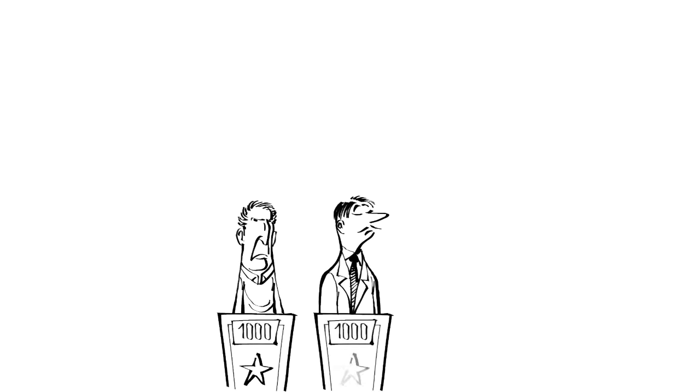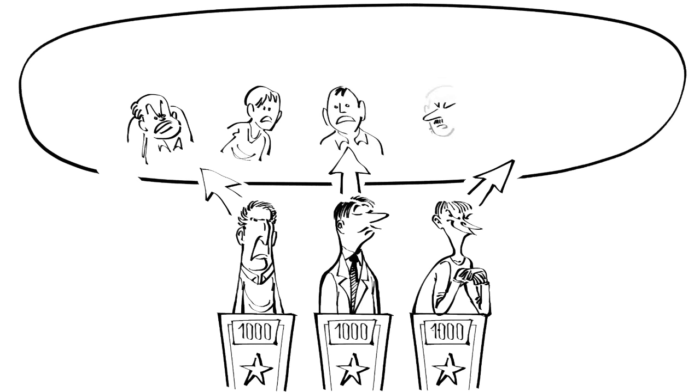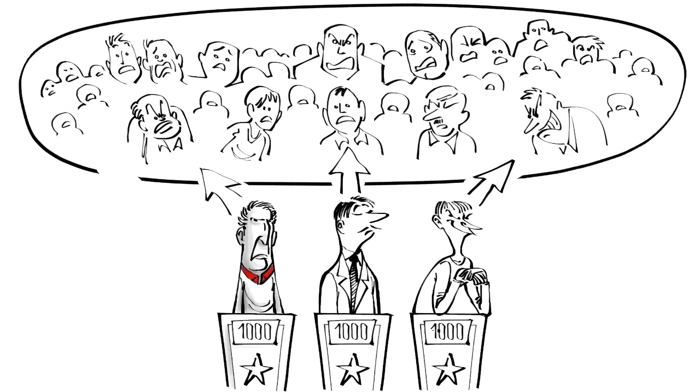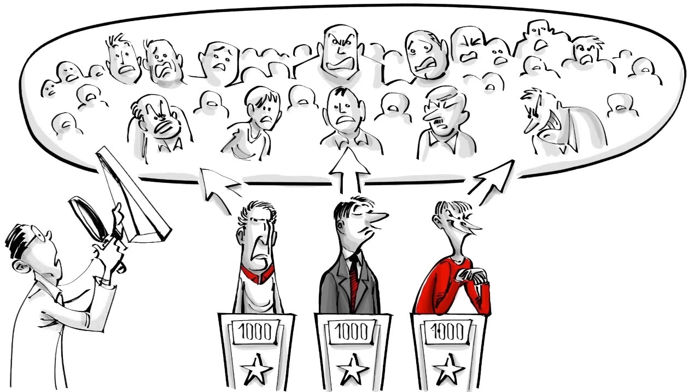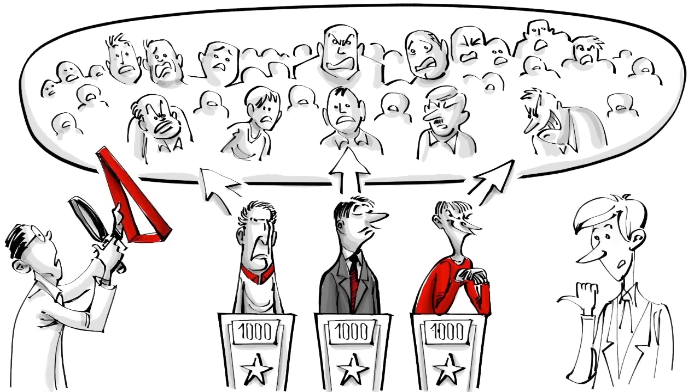People scoring high on the three traits are more likely to commit crimes and create severe social problems in society, families and organizations. This is why the research on the dark triad is used widely in law enforcement, psychology and business. Here is an overview of what we know.